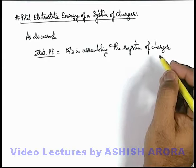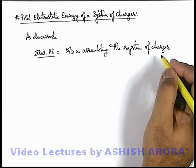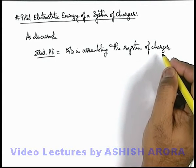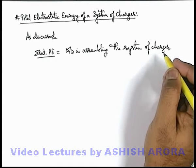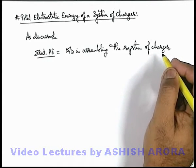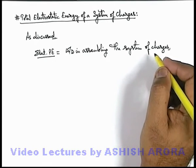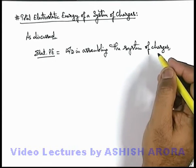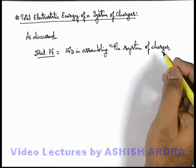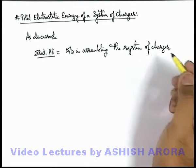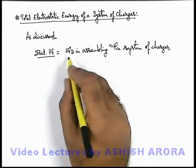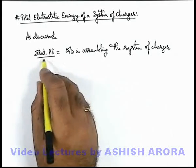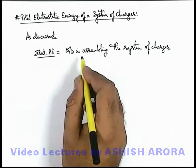If the forces among charges are attractive, then the work will be done by the electric forces and the final potential energy of the system will be negative. So whenever work is done, it is stored in the form of electrostatic potential energy.